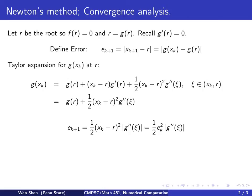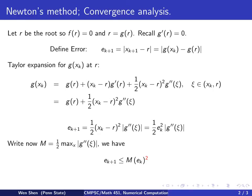Plugging this expression back into the error formula, e_{k+1} equals |x_{k+1} - r|, we see that after subtracting, what remains is the one-half·g''(ξ) term. We notice (x_k - r) is the error at the previous iteration, so the next error equals the previous error squared times some constant. Denoting one-half·|g''(ξ)| bounded by a constant M, we get e_{k+1} ≤ M·e_k².